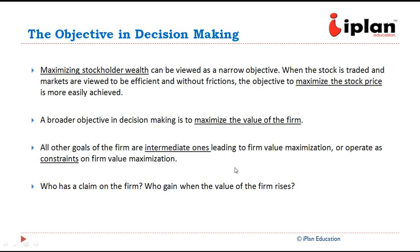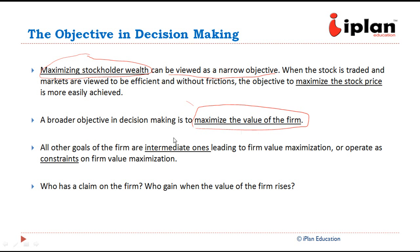If we look at this objective of maximizing shareholders' wealth, this is a narrow objective. According to modern theories, the larger objective is to maximize the value of the firm. All other goals are intermediate ones. The final objective is to maximize the value of the firm. So, who have the claims on the firm?